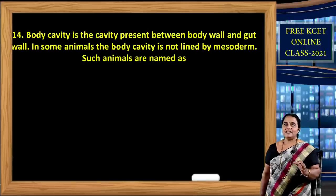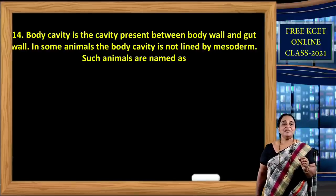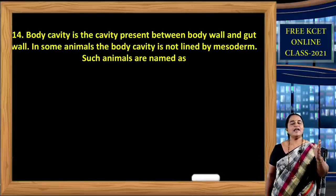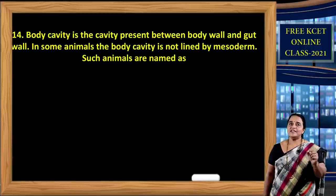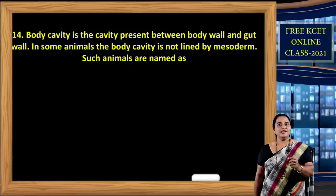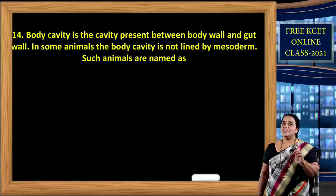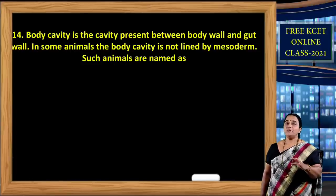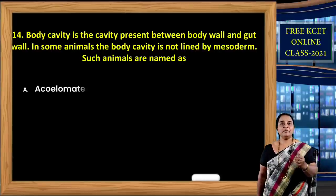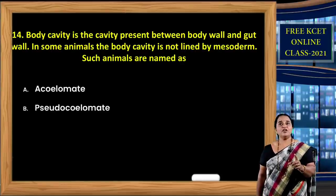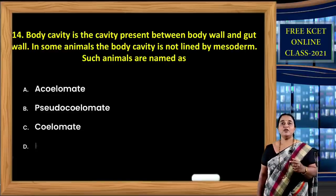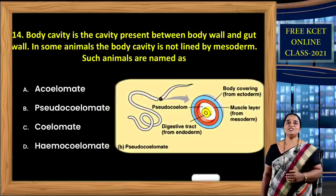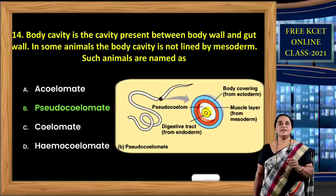Question 14: Body cavity is the space between body wall and gut wall. In some animals, this body cavity (coelom) is not lined by mesoderm — such animals are called pseudocoelomates. If coelom is present and lined by peritoneum, we call them eucoelomates; if absent due to flat body, acoelomates; and if coelom present but not lined by mesodermal peritoneum, pseudocoelomates. The correct option is B — pseudocoelomate.